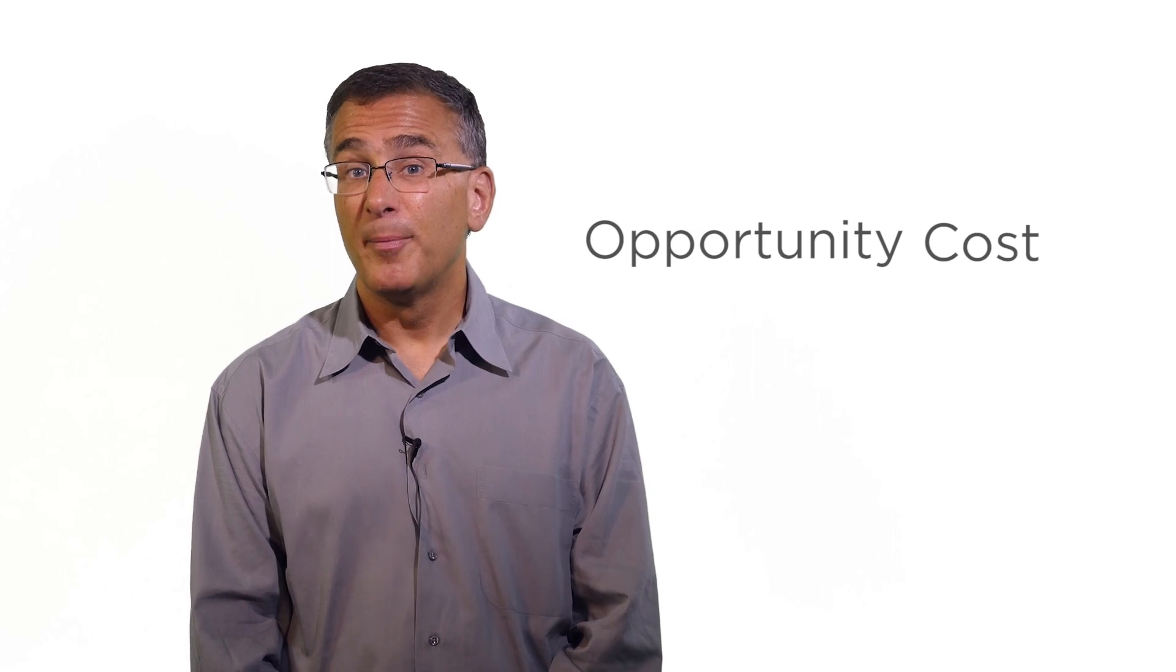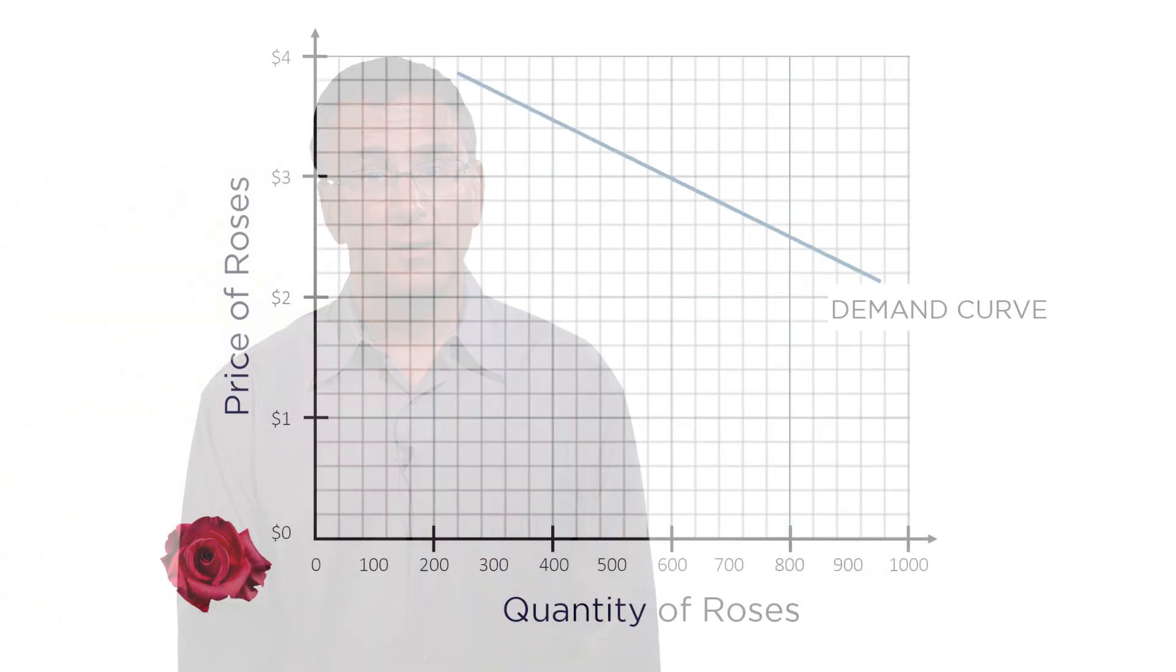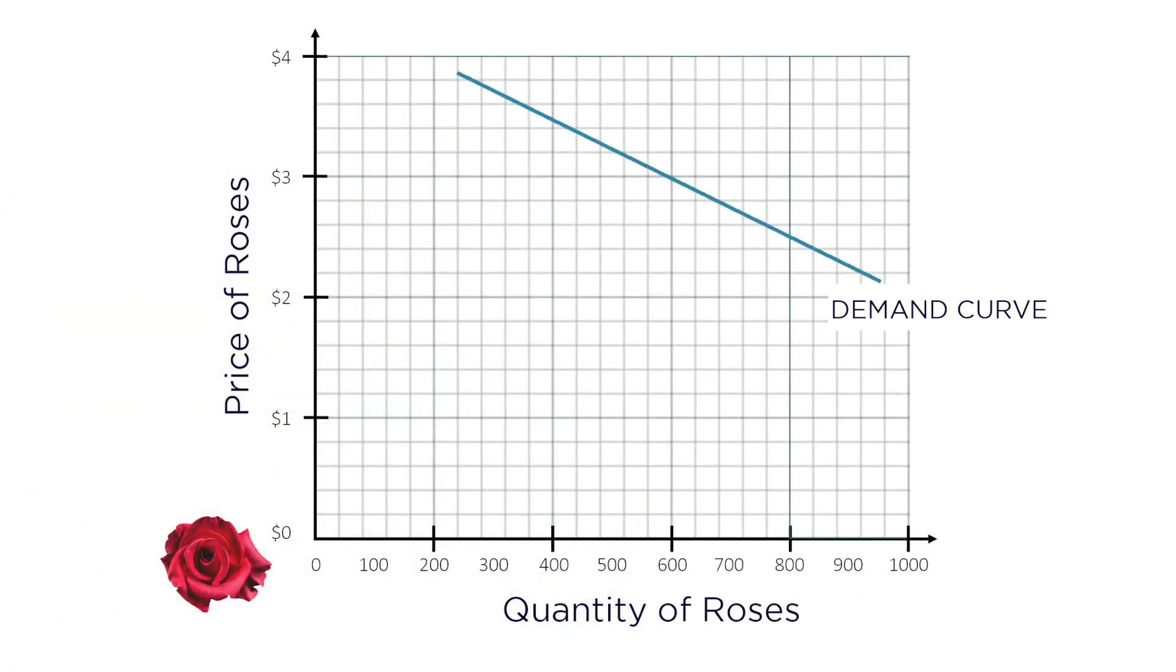Now, why should this be? Well, think back to the concept of opportunity costs. The more expensive something is, the more you have to give up to purchase it, so the less you want it. This means the demand curve is downward sloping. Higher prices lead to lesser quantities demanded by consumers.